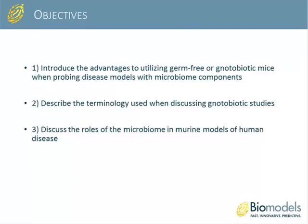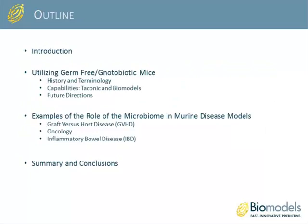Our objectives for today are to first introduce the advantages of utilizing germ-free or notobiotic mice when probing disease models with microbiome components, to describe the terminology used when discussing notobiotic studies, and to discuss the roles of the microbiome in murine models of human disease. We'll cover an introduction, utilizing germ-free and notobiotic mice, examples of the microbiome's role in murine disease models—including graft-versus-host disease, oncology, and inflammatory bowel disease—and then summary and conclusion.